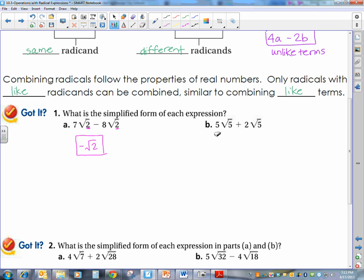Then we have 5 square roots of 5 plus 2 square roots of 5. So, again, we look at our radicand. I have a 5 and a 5. Those are the same. So, I'm going to combine the numbers on the outside. 5 plus 2 is 7 square roots of 5.